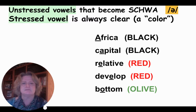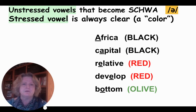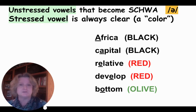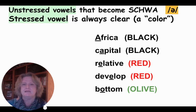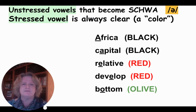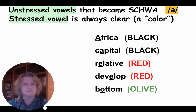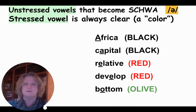Let's look at how this works in words with two or more syllables. Africa is tempting to pronounce with equal vowels, but the first A has the stress and is black. The I and the final A, even though they're very different letters, are both pronounced schwa — Africa. Similarly, capital has its stressed vowel as black, but the I and the A are also schwa — capital.